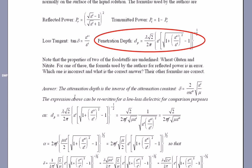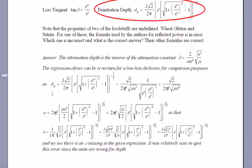As you can see, the attenuation depth is the inverse of the attenuation constant, so delta is actually one over alpha. And so the expression above can be rewritten for a low loss dielectric for comparison purposes. So, here is their expression.